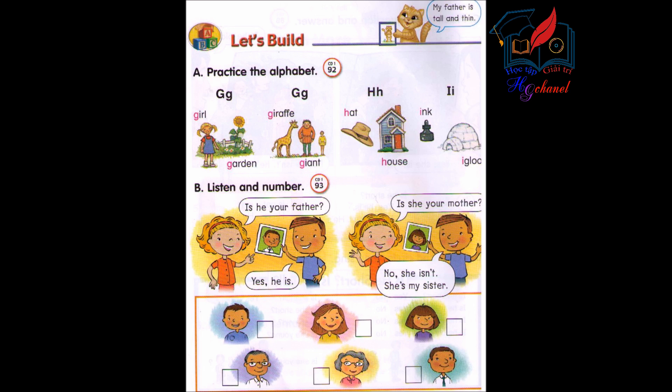Number 3. Is he your father? Yes, he is. Number 4. Is she your sister? No, she isn't. She's my mother. Number 5. Is he your brother? Yes, he is. Number 6. Is she your sister? Yes, she is.